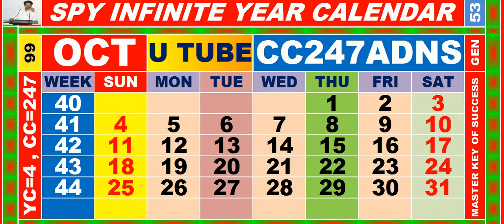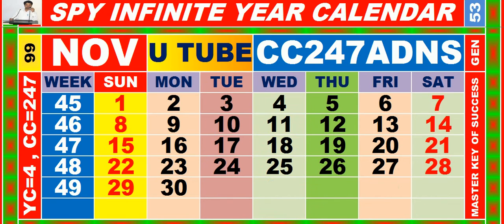Calendar for the month of October, having calendar code equal to 247. Calendar for the month of November, having calendar code equal to 247.